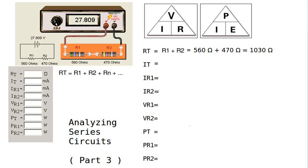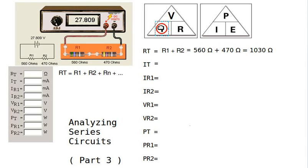Now we'll use that value to help us find the current through the circuit. Recall that in a series circuit the current is the same in all parts, so if we find the current in one part we find it in all parts. From Ohm's Law, I equals V over R — remember that E and V are the same symbol — so the current equals voltage divided by resistance.